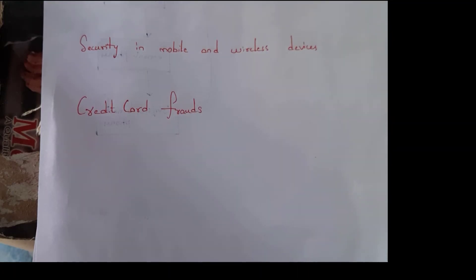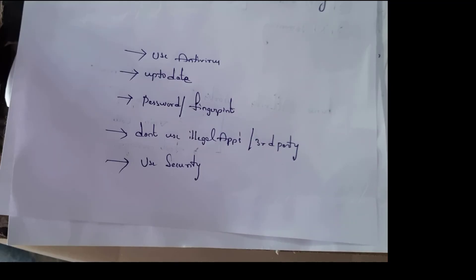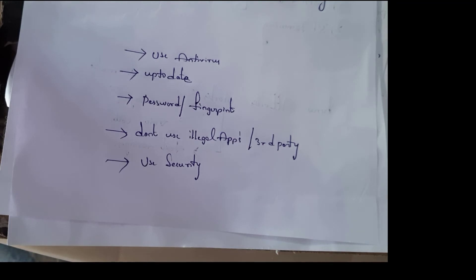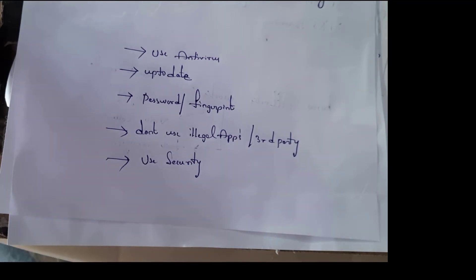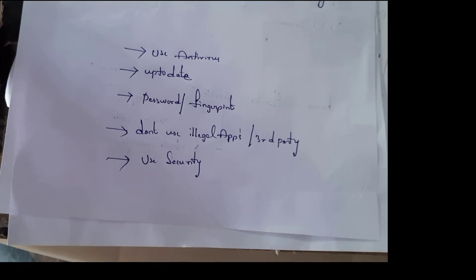Third one is security in mobile and wireless devices. To avoid attacks, follow these things to secure your mobile and wireless devices. First, use antivirus. Next, keep software up to date — always try to update your apps or software. Next, use passwords or fingerprint login to protect your mobile or wireless devices.